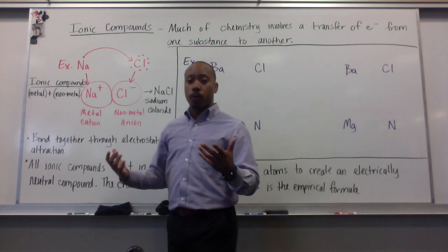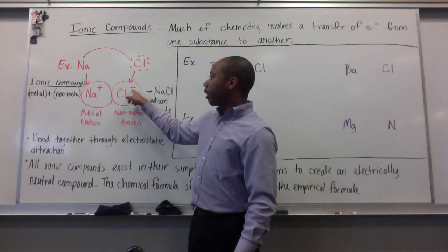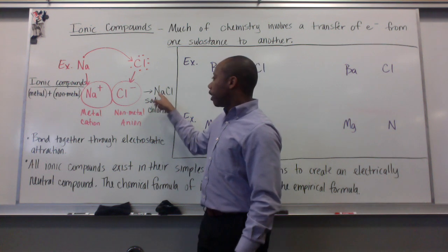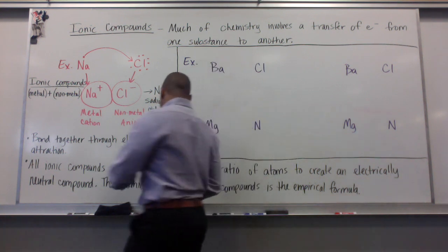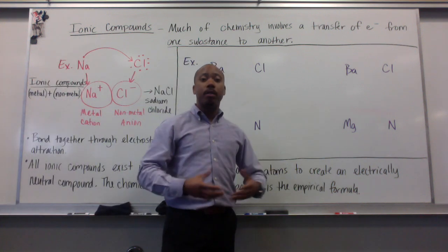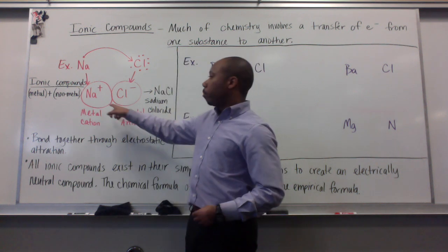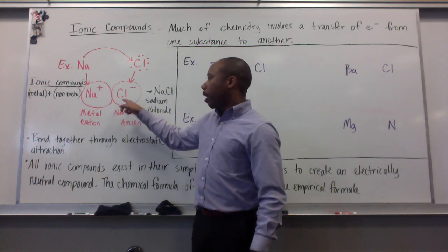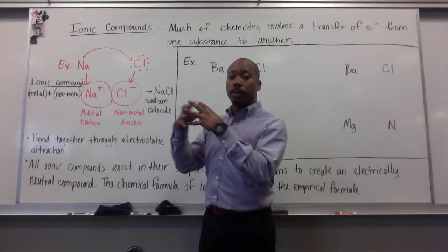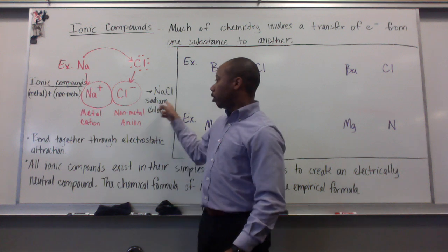The chemical formula here, NaCl, we have one sodium, one chlorine. It makes sodium chloride. This NaCl, the chemical formula, is the empirical formula. It's in its simplest form. It's important to recognize that my sodium cation and my chloride ion, you drop the ion names because once they come together, they're no longer ions. It's electrically neutral. It becomes just sodium chloride.